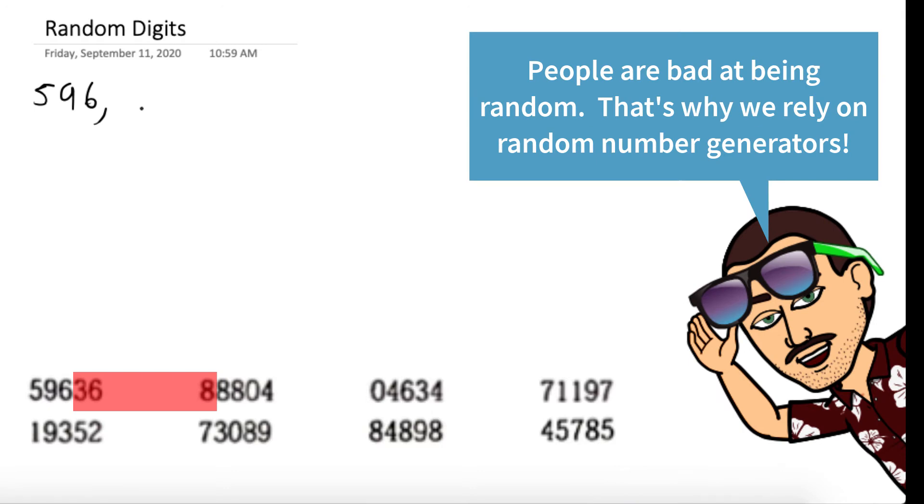So the first three digits are 596, then 368. Again, you can just see we're just reading off three digits at a time. So there's really nothing to this.